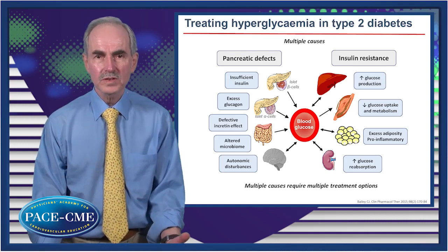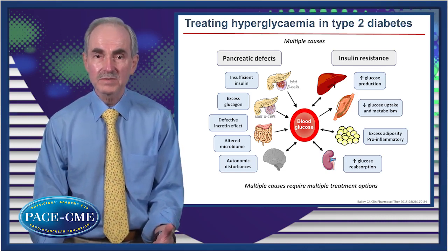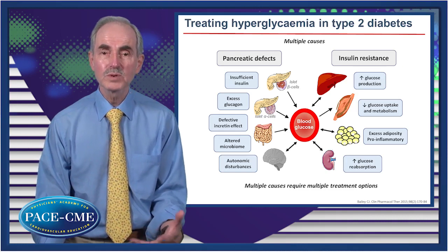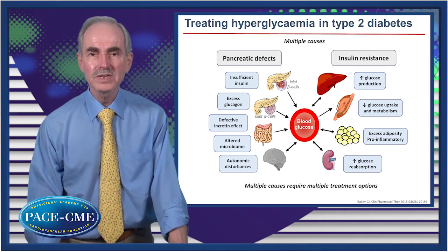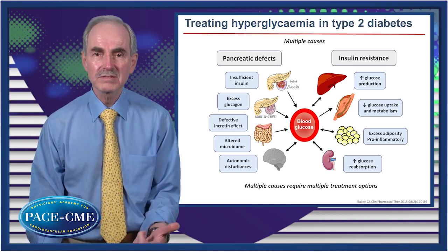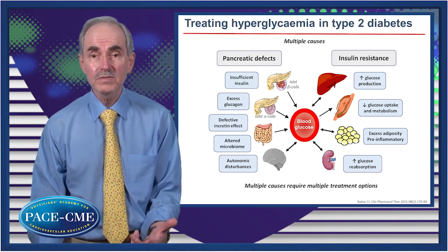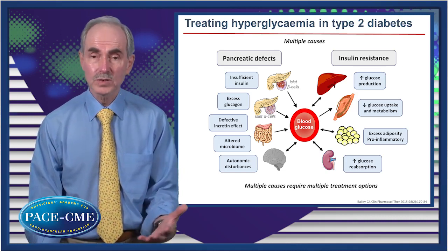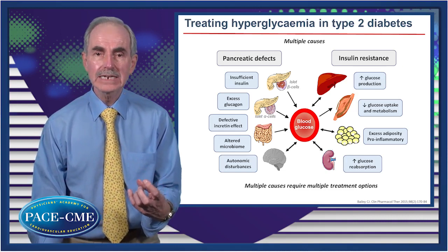Let's look at what we're trying to deal with in type 2 diabetes. There are multiple causes for the development of hyperglycemia. These involve insulin resistance, inadequate insulin production and secretion, and many other problems. Going around this circle of issues, the liver produces too much glucose, and the muscle doesn't get enough of that glucose because of insulin resistance. We often see excess adipose tissue, which also contributes to a pro-inflammatory state. And because more glucose is being filtered through the kidney, the kidney adapts by reabsorbing more.